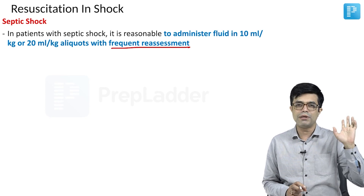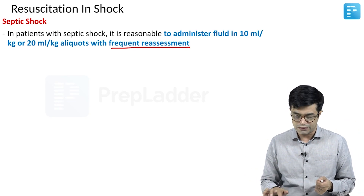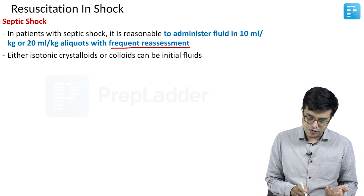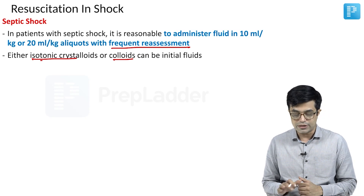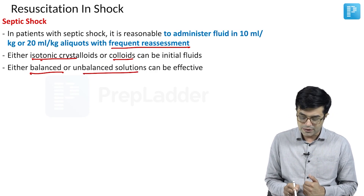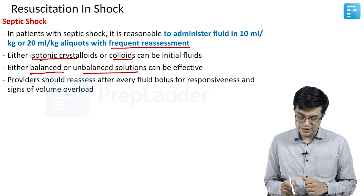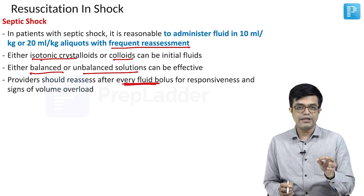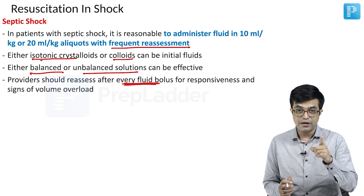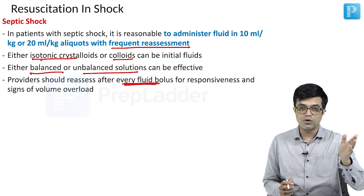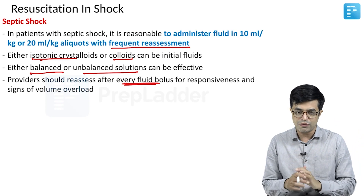Earlier, it was 20 ml per kg. Now we say 10 or 20 ml per kg aliquots can be given. Either isotonic crystalloids or colloids can be used as the initial fluids. Either balanced or unbalanced solutions can be effective. Providers should reassess after every fluid bolus to see whether the response to therapy has come, and you need to check for volume overload as well.